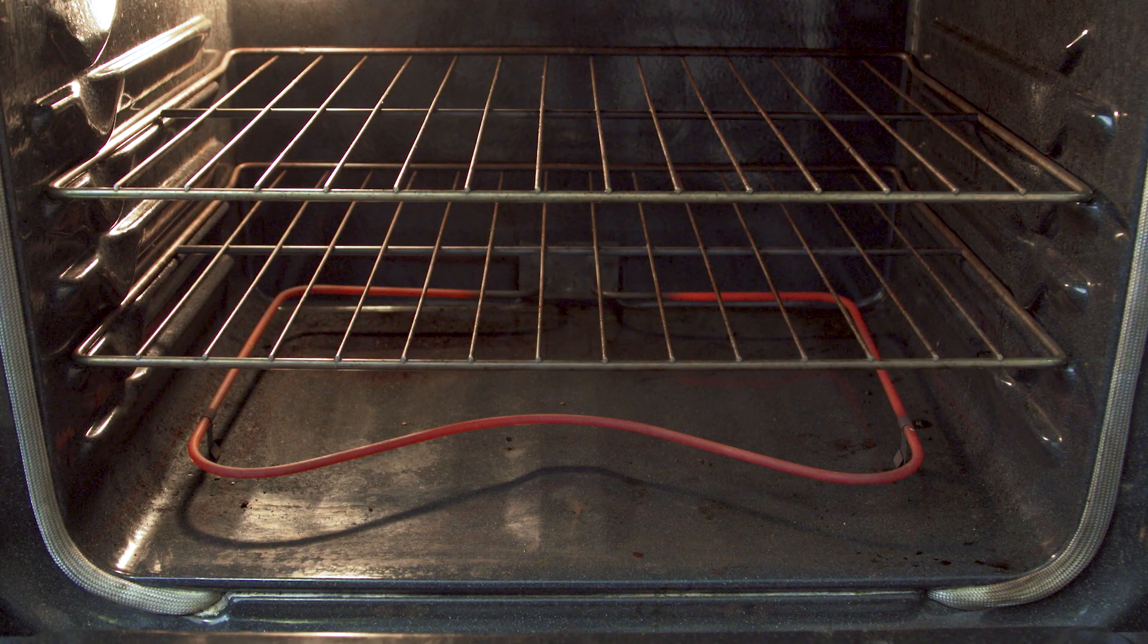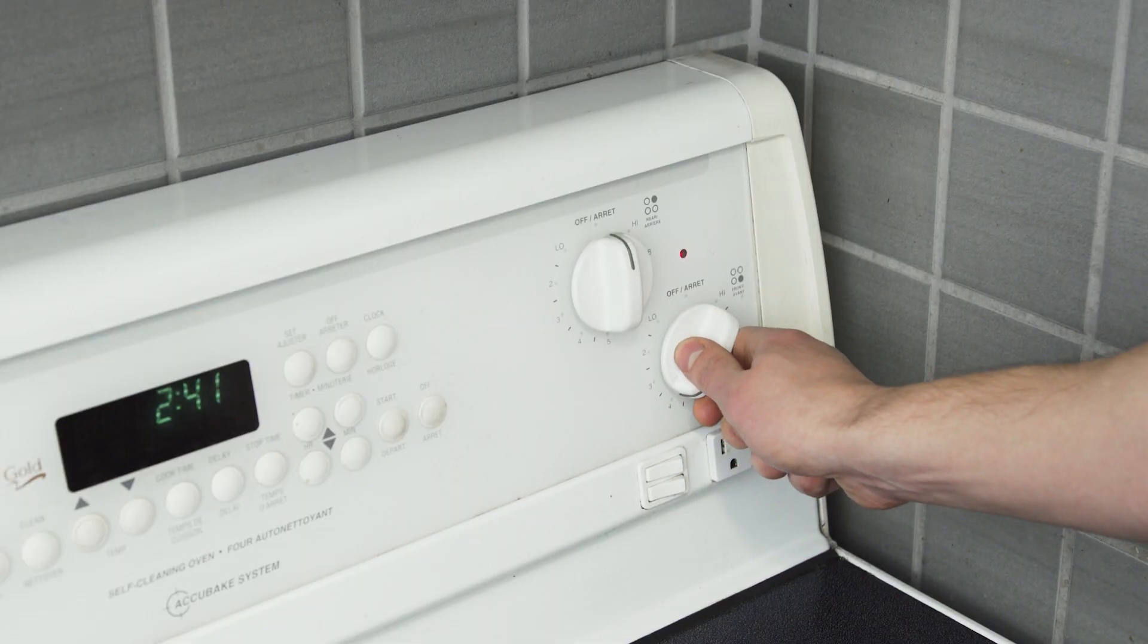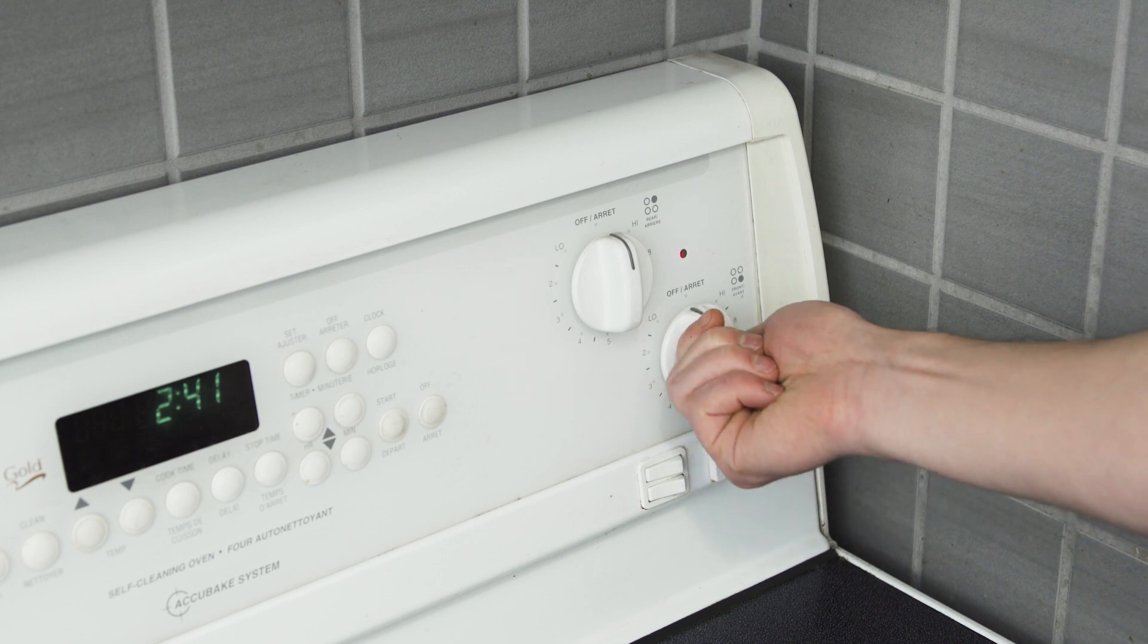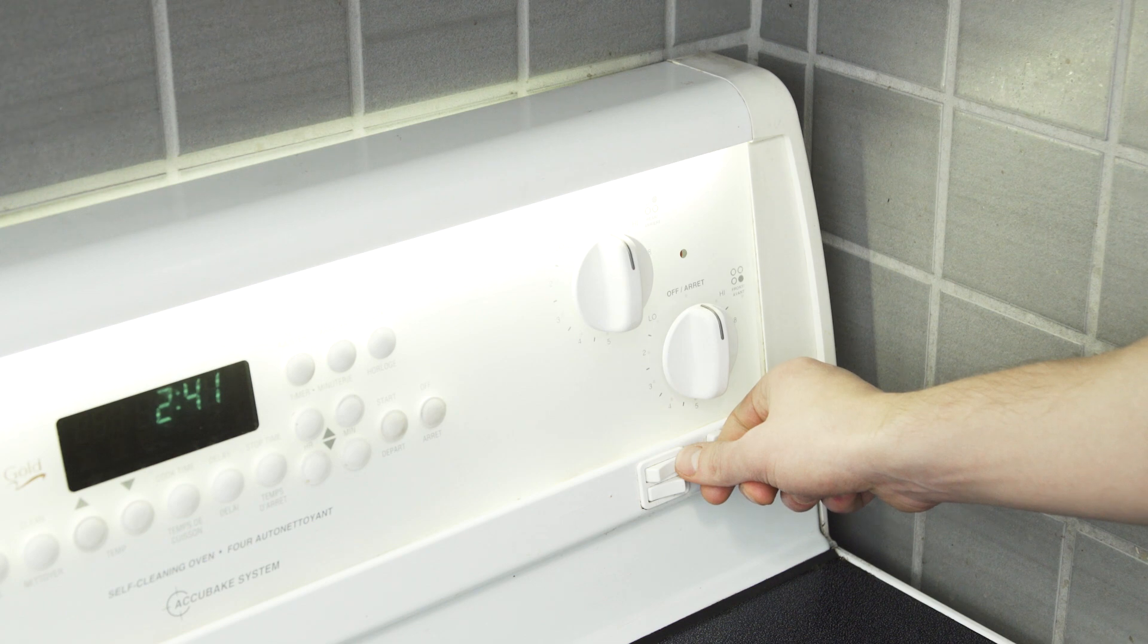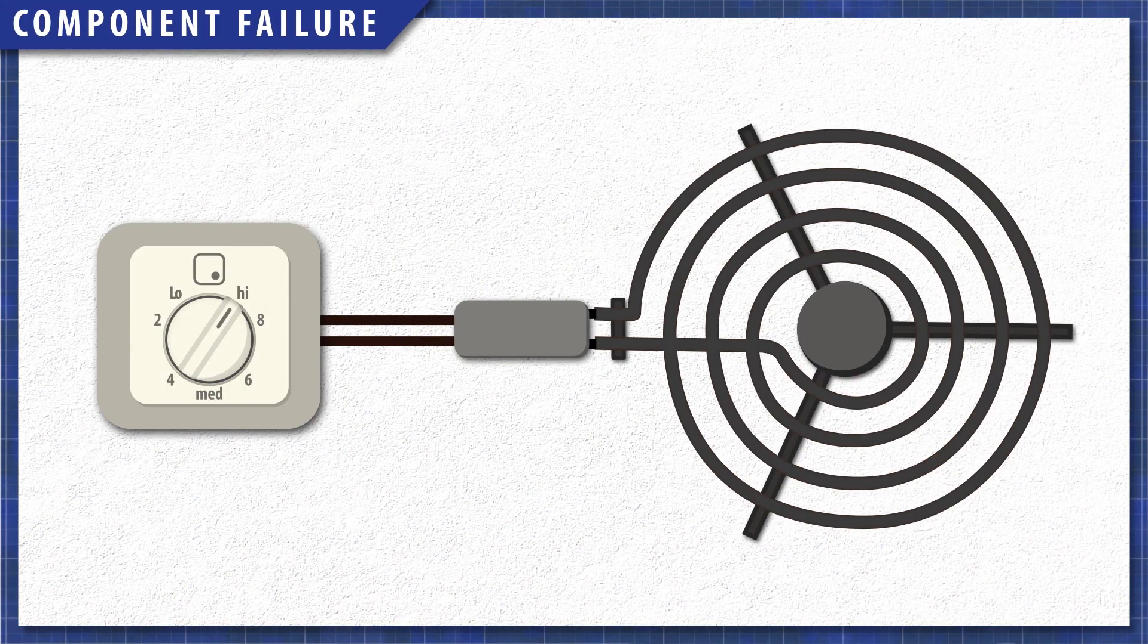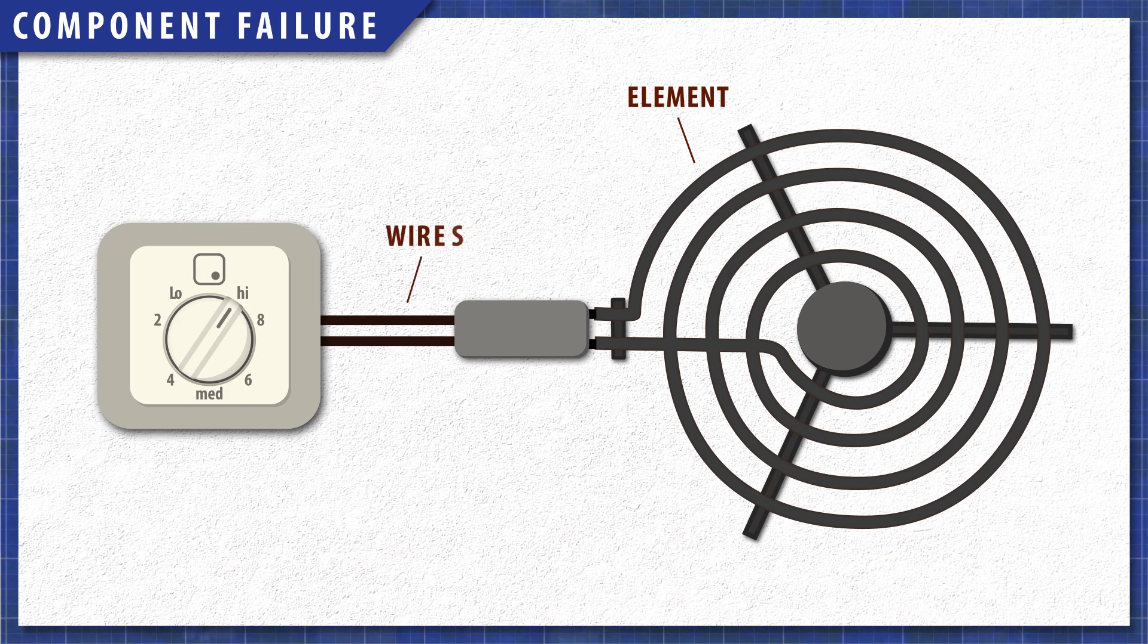Appliances usually have several circuits with a few components chained together. Any single component can create problems, so it's best to observe what is and what isn't working, as this will tell you what circuits are affected. For example, if only one stove element stops working, then it's either a problem with the element, wires, or the switch for that circuit.